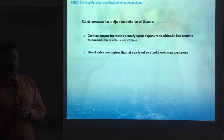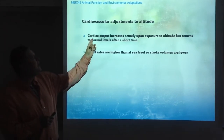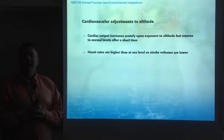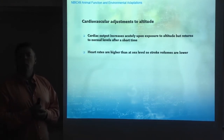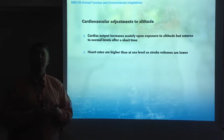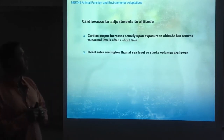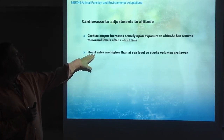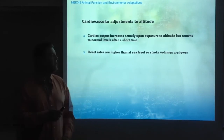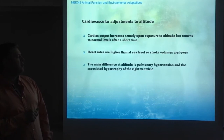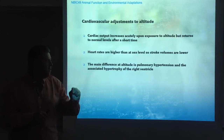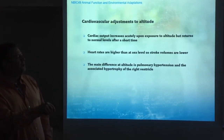What happens with cardiovascular adjustments to altitude? First, there is an increase in cardiac output, but this increase is acute. In the long term, cardiac output returns to normal values. Immediately after exposure to altitude, cardiac output tries to compensate, but later it returns to normal. Heart rates, however, remain higher than at sea level. A higher heart rate with unchanged cardiac output means a lower stroke volume. The main cardiovascular change at altitude is the existence of pulmonary hypertension.